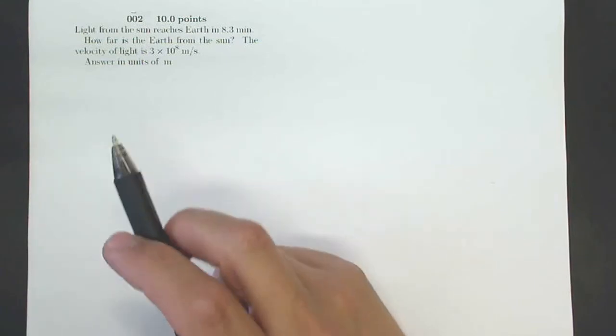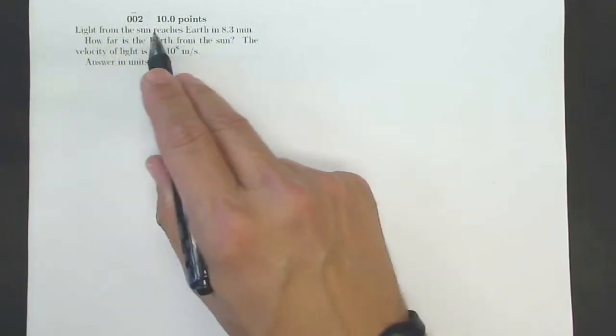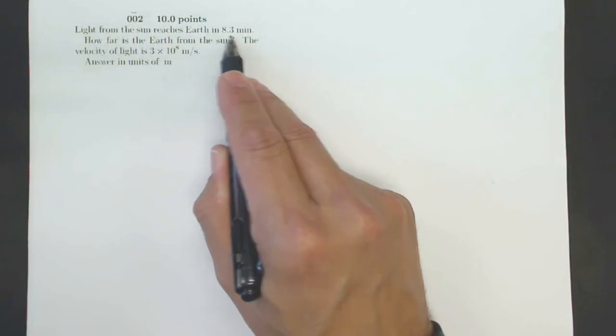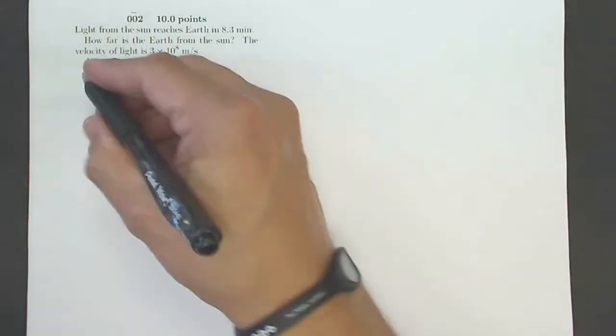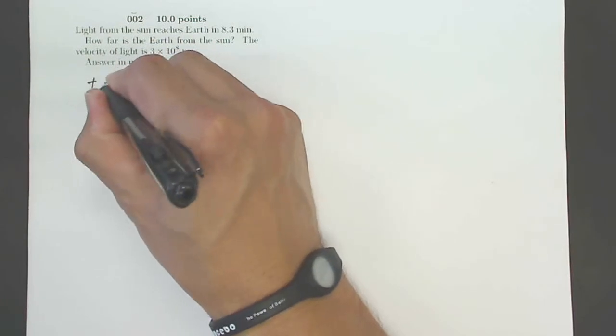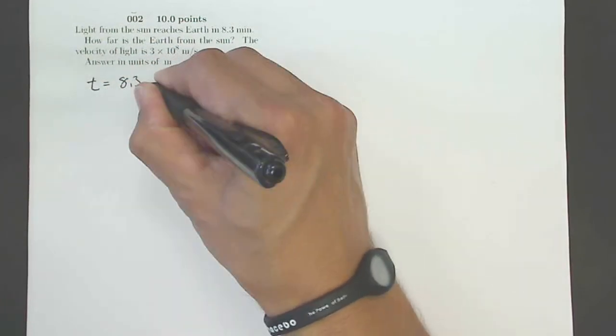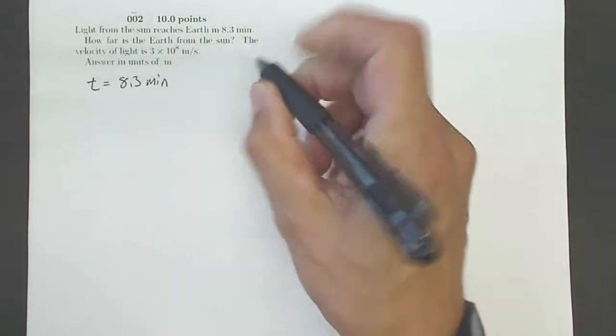So first thing I want to do is identify any numbers that I have here as well as figure out what it is I'm looking for. Light from the sun reaches earth in 8.3 minutes. There is some number and there are some units. I know that minutes is a way we measure time. So I'm going to write time t equals 8.3 minutes. What else do I know?